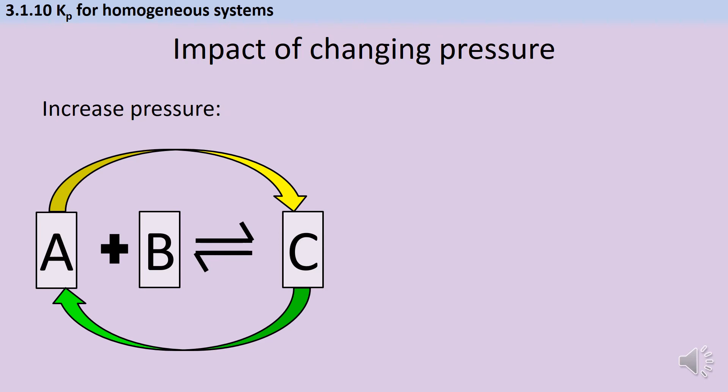The second condition that we can change is the pressure. So we're going to take the same hypothetical reaction and talk about increasing the pressure. And firstly, we'll look at that impact on the position of equilibrium. So as with all these questions, we start off by saying Le Châtelier's principle tells us that when we take an equilibrium at rest and we change something, the system will shift to counteract that change. So if we increase the pressure, the system will shift to decrease the pressure.